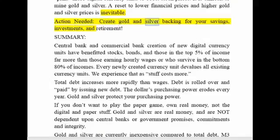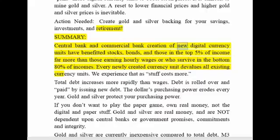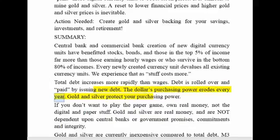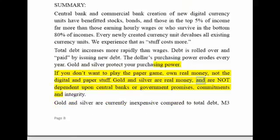Action needed: create gold and silver backing for your savings, investments, and retirement. Summary: central bank and commercial bank creation of new digital currency units have benefited stocks, bonds, and those in the top 5% of income far more than those earning hourly wages or in the bottom 80% of incomes. Every newly created currency unit devalues all existing currency units — we experience that as stuff costing more. Total debt increases more rapidly than wages; debt is rolled over and paid by issuing new debt. The dollar loses purchasing power every year. Gold and silver protect your purchasing power. Own real money — not the digital and paper stuff. Gold and silver are real money, not dependent upon central banks or government promises, commitments, and integrity.